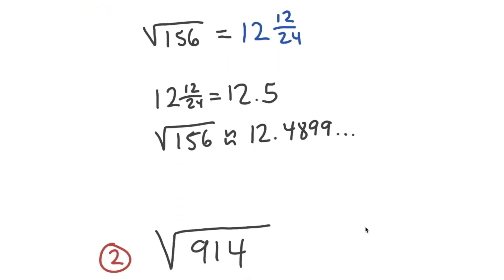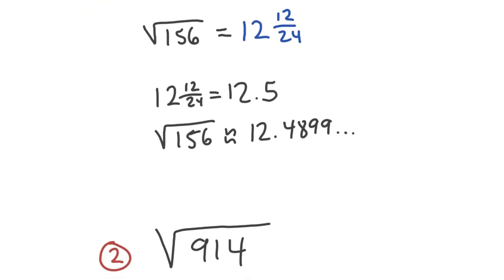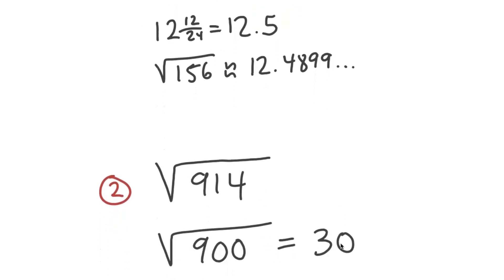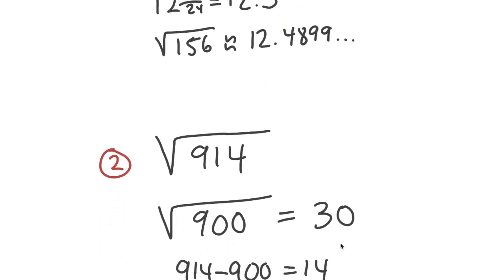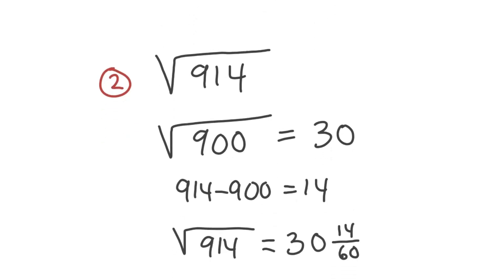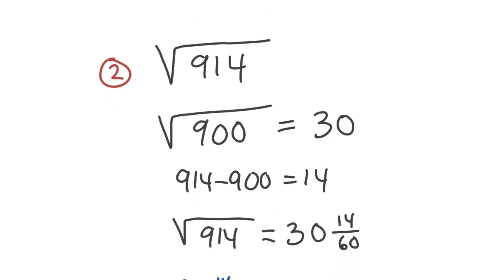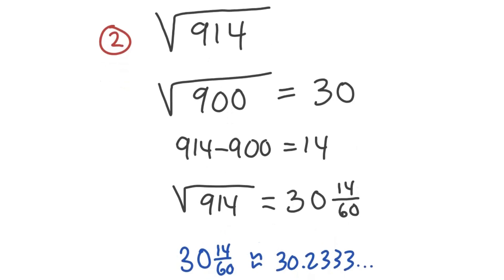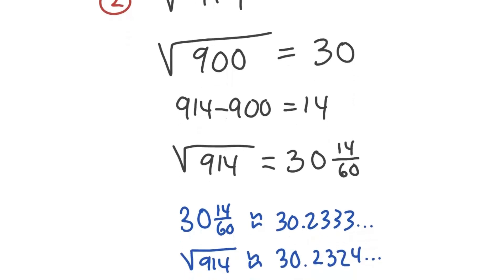Let's move on to number two. Square root 914. Largest perfect square, square root 900 is 30. Find the difference, it's 14. So you get 30 and then 14 over 60. 60 is 30 times 2. So 30 and 14 over 60 is 30.233 approximately. The actual value of square root 914, 30.2324. Very, very close again.